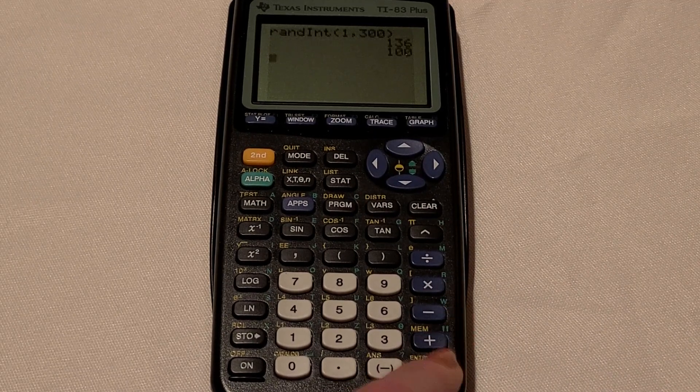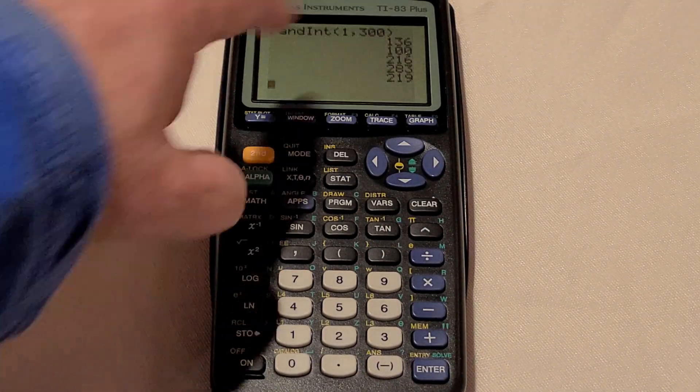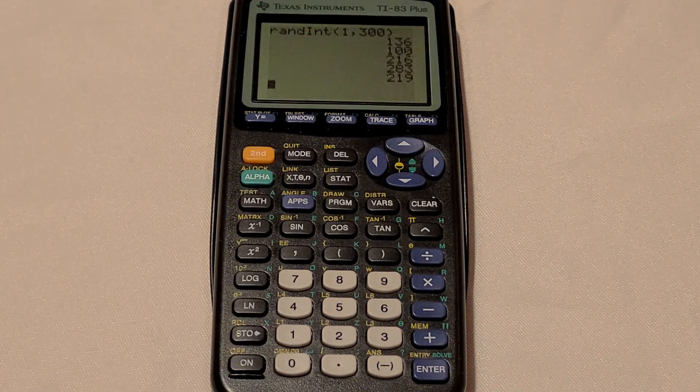1, 2, 3, 4, 5. That gave me 5 random numbers between 1 and 300.